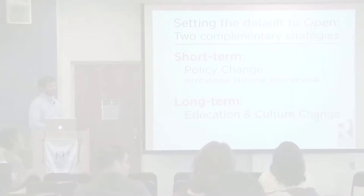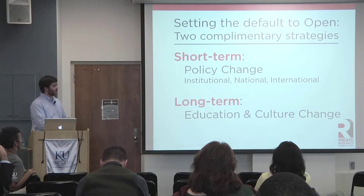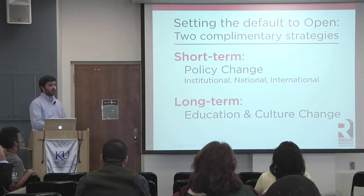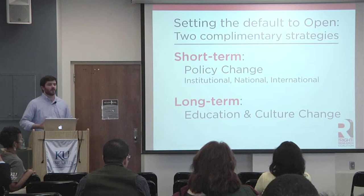Our activities to promote open access fall into two complementary strategies. The first is promoting short-term policy change — working with students and others to promote open access policies at the institutional level. Luckily, you already have a great institutional open access policy here at KU. But also at the national and international level to ensure research being produced is made available in some form. In the longer term, we're looking to educate the next generation of scholars and researchers about open access and why it's actually beneficial for you as a scholar and as an author.